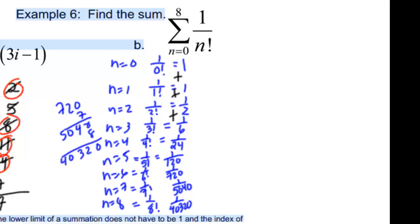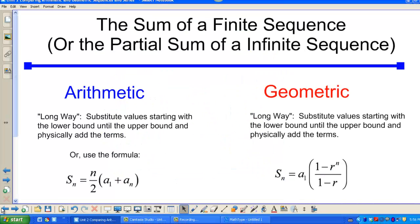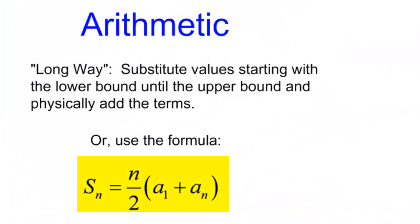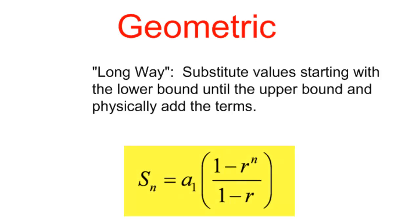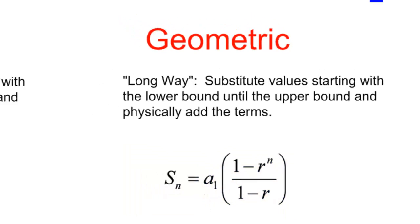Now, we have some shortcuts. If it's an arithmetic sequence, you can use the formula where n is the number of terms divided by 2, and you multiply that by the sum of the first term plus the last term. Geometric also has a formula. We take the first term and we multiply that by 1 minus the common ratio raised to the nth power, all over 1 minus the common ratio.